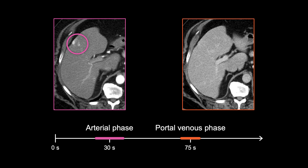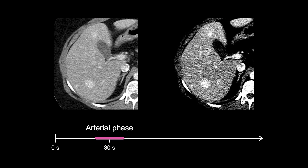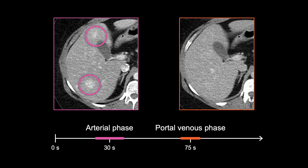In this example of a renal cell carcinoma staging exam, the liver metastasis is clearly visible on the arterial phase image, but nearly impossible to locate on the portal venous phase. In this example of liver metastases from a gastric neuroendocrine tumor, the liver mass is well-defined and easy to see in the arterial phase image, but it really jumps out and we can see an additional mass when the liver window is applied. However, both masses are nearly impossible to see on the portal venous phase.